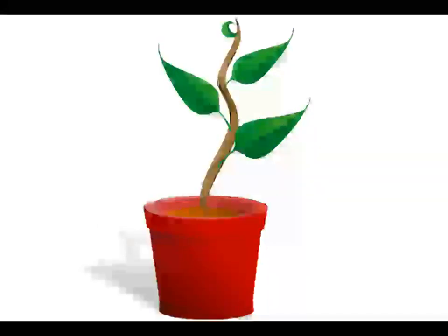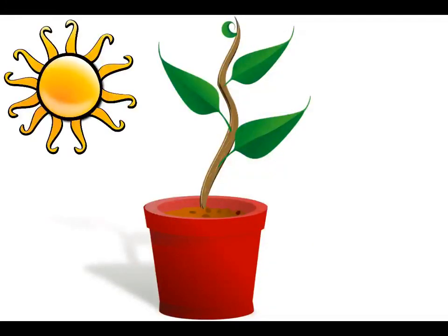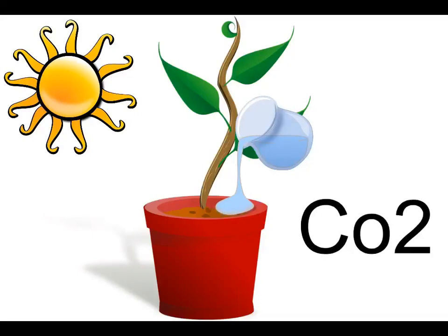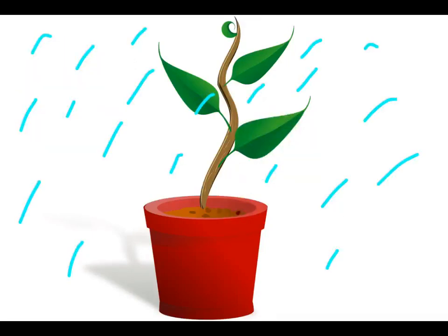For photosynthesis to occur you need sunlight, water, and carbon dioxide. When it rains, water gets absorbed into the soil and the plant takes in the water from the soil through its roots.